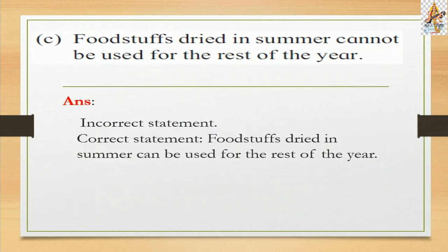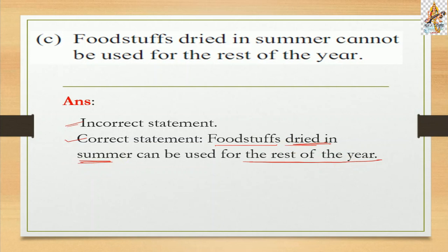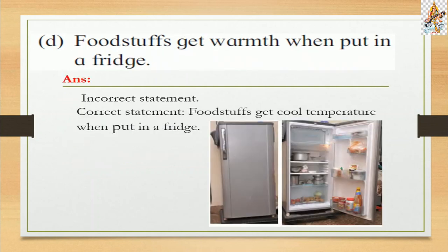Statement c: Foodstuffs dried in summer cannot be used for the rest of the year. This is an incorrect statement. The correct statement is: foodstuffs dried in summer can be used for the rest of the year. Drying in summer or in the sun is one preserving method. Statement d: Foodstuffs get warm when put in a fridge. This is also incorrect. The correct statement is: foodstuffs get cool temperature when put in a fridge.